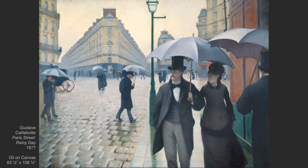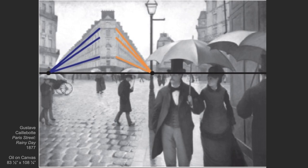Look at this painting and see if you can find an example of two-point perspective. This building in particular — this corner building — you're looking at the corner of it. It's presenting two sets of parallel lines: one set that vanishes here on the horizon line, and one set that vanishes here on the horizon. That is two-point perspective in practice.